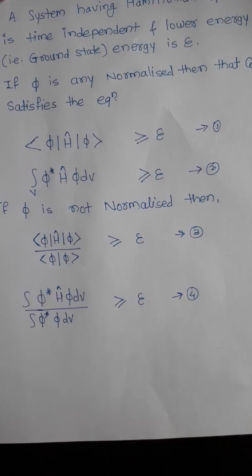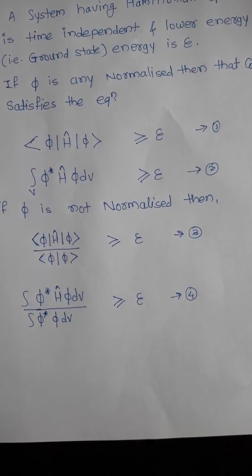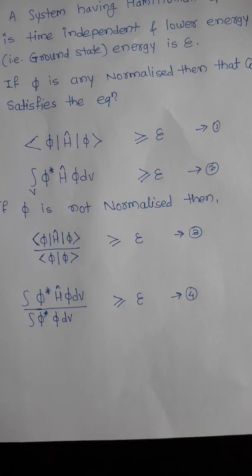And the integration form: ∫Φ†HΦ dv / ∫Φ†Φ dv is less than or equal to E, the energy.